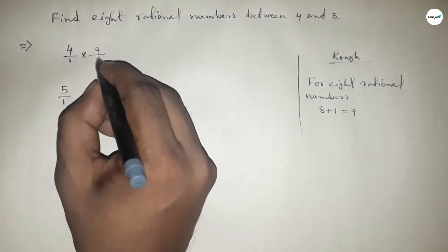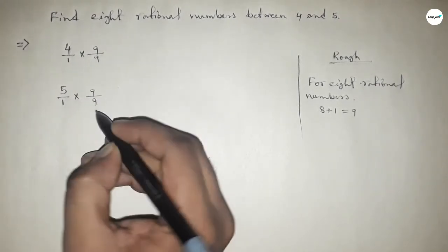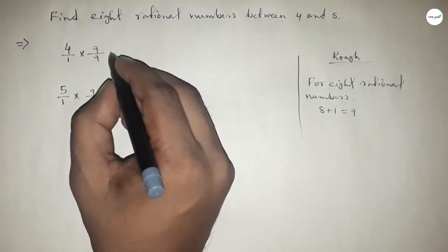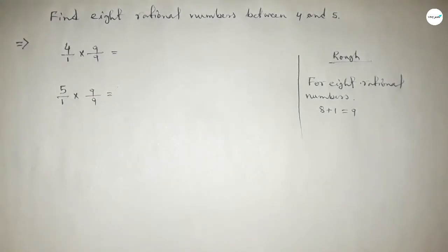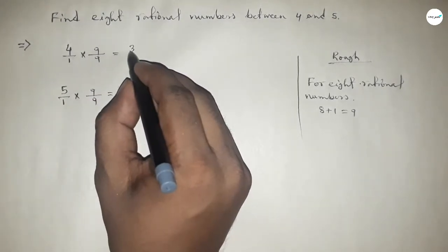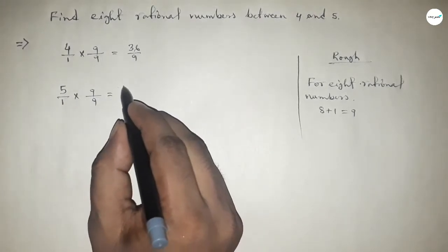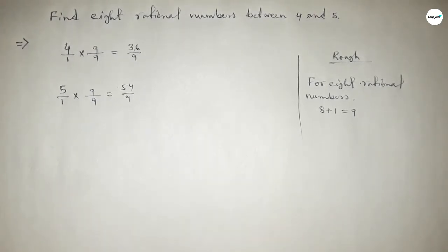By this way, okay, so this is 36 over 9 and this is 45 over 9.